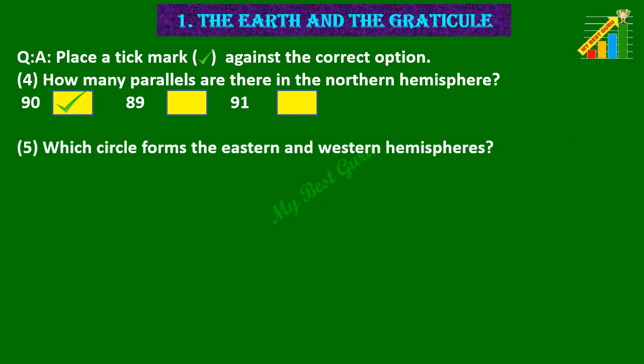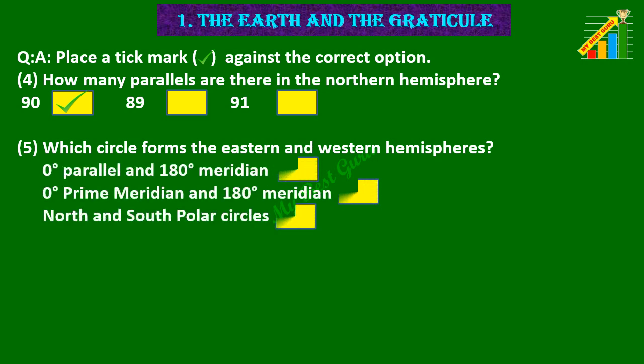5. Which circle forms the eastern and western hemispheres? Options are 0 degree parallel and 180 degree meridian, 0 degree prime meridian and 180 degree meridian, North and south polar circles. Correct option is 0 degree prime meridian and 180 degree meridian.